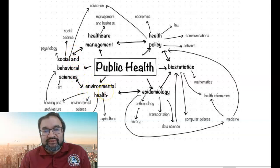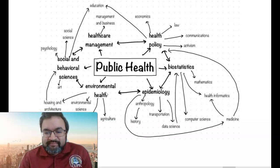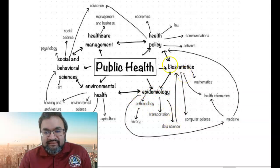For instance, the environmental justice movement looks at neighborhoods — poor neighborhoods that have more dump sites than richer neighborhoods. Epidemiology connects to anthropology, transportation, and data science. And again, there's some intersection between data science and biostatistics. Biostatistics and epidemiology I see as cheese and wine — they go together very nicely and have a lot of intersections.